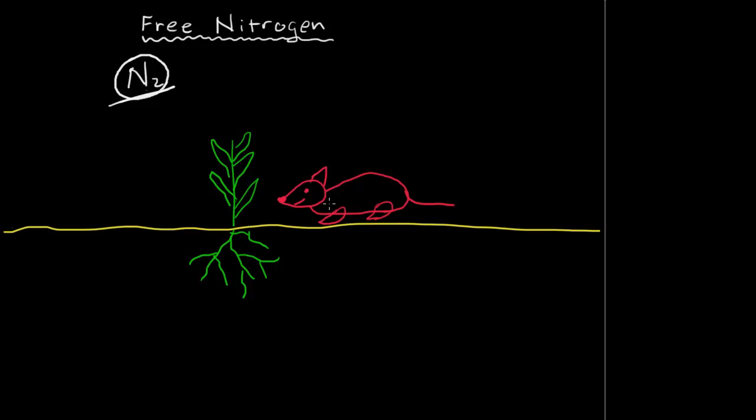The element nitrogen is necessary for all life, for animals and plants. Unfortunately, in the state that it is in the atmosphere, N2, plants and animals can't just use it. It has to be changed, and that term is called nitrogen fixation.